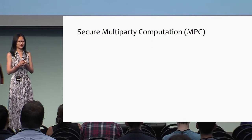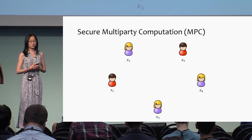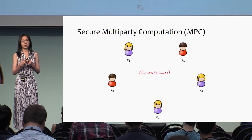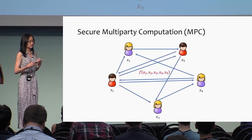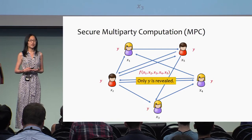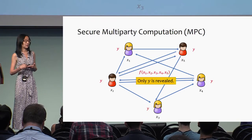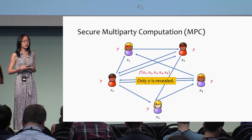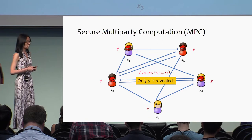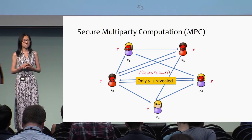Secure multi-party computation, MPC, is a protocol among multiple parties. Every party has a private input and they want to jointly compute some function f on their private inputs. At the end of the protocol, everyone learns the output. The security guarantee is that the output Y is the only thing they can learn from this computation. Even if up to M-1 parties are corrupted and colluding, they cannot learn anything more about any other party's private input.